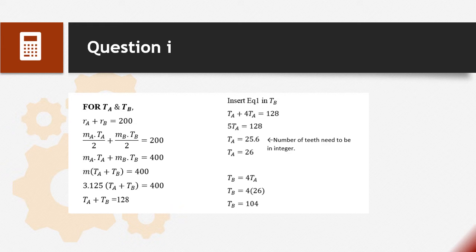To find TA and TB, RA plus RB equals 200. We change R to the equation M multiplied with T over 2. The denominator moves to the right hand side, so the new equation is MA multiplied with TA plus MB multiplied with TB equals 400. As we know MA equals MB, we change to 3.125. 400 at the right hand side will divide by 3.125, so we get TA plus TB equals 128.